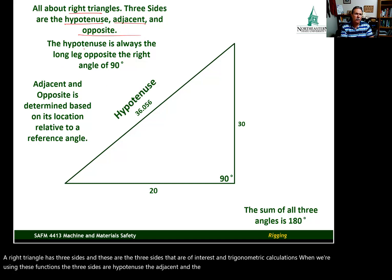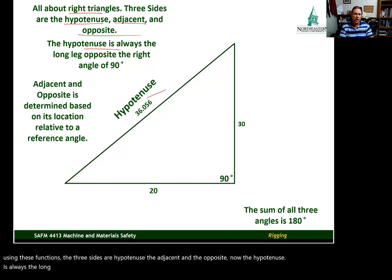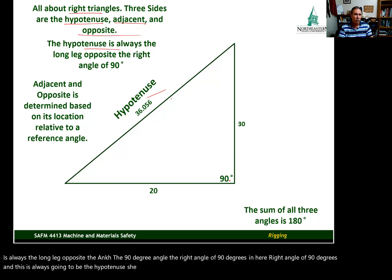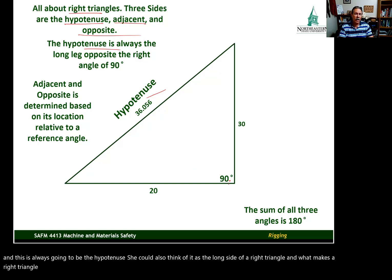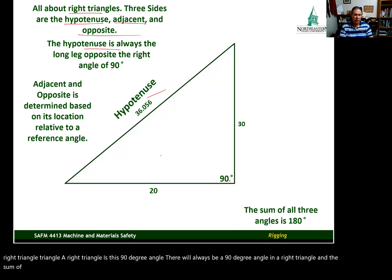The hypotenuse is always the long leg opposite the 90-degree angle — the right angle. What makes a right triangle a right triangle is this 90-degree angle. There will always be a 90-degree angle in a right triangle, and the sum of all three angles in the triangle will always be 180 degrees. That's true for all triangles, not just right triangles.